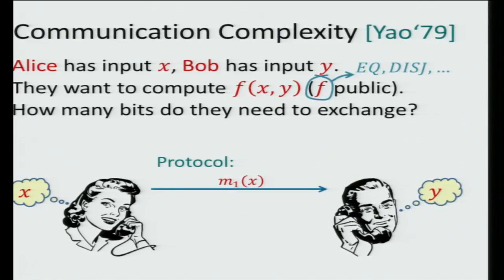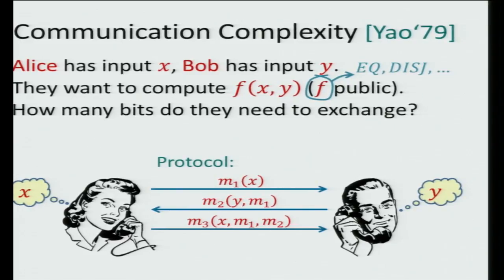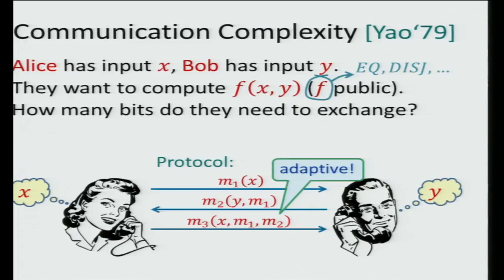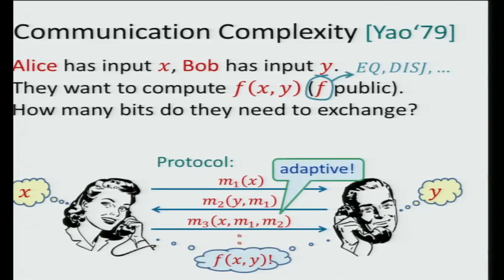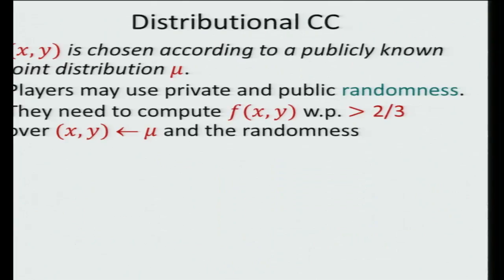Alice can send some message that depends on her input, and Bob may reply with a different message that depends on his input and their previous messages. Alice can then send something else that depends on everything she knows so far. This protocol can be adaptive — every message can depend on all the previous messages. They do this for a while, and hopefully by the time the protocol ends, both players know f of x, y.